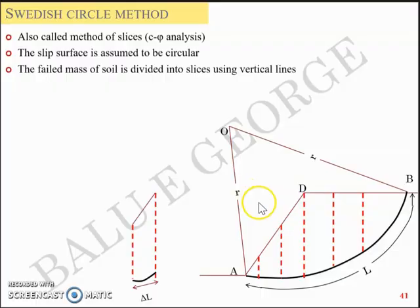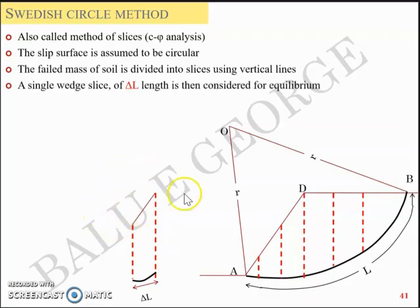So you have different number of slices here and the entire volume of ADB soil mass is divided into slices. Let's take a single slice out of this and the single wedge or slice of delta L length along the curve is then considered for equilibrium.